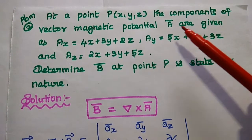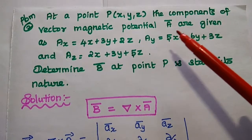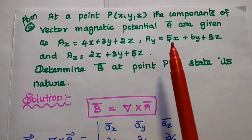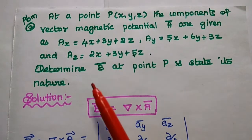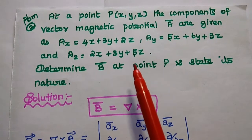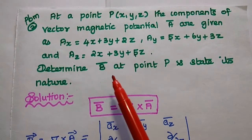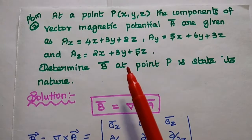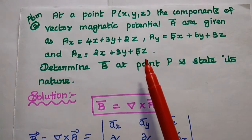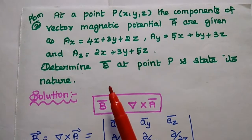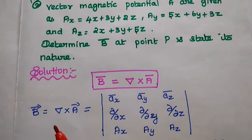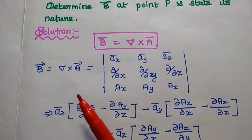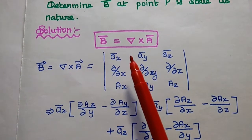At a point P(x, y, z) the components of the vector magnetic potential A vector are given as Ax = 4x + 3y + 2z, Ay = 5x + 6y + 3z, and Az = 2x + 3y + 5z. Determine the magnetic flux density B vector at point P and state its nature. In this problem the vector potential components are directly given and we use the formula B vector = del cross A vector.